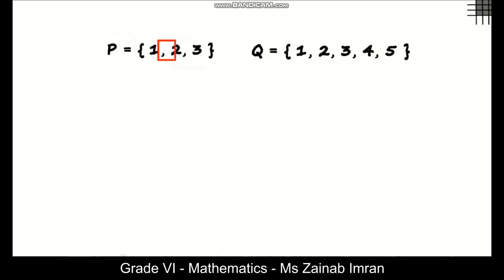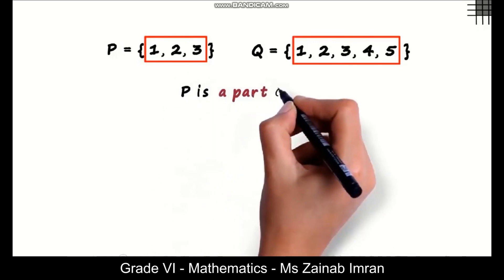Understand the elements well. This has 1, 2 and 3 and this one has 1, 2, 3, 4 and 5. This is a part of this. And that's why we say set P is a part of set Q.